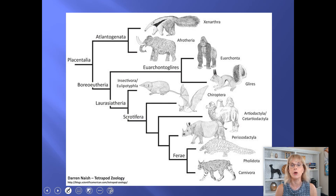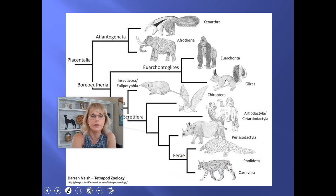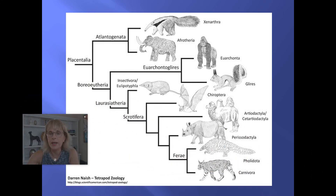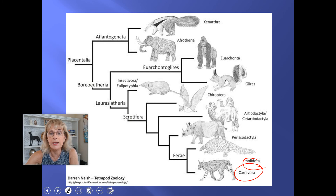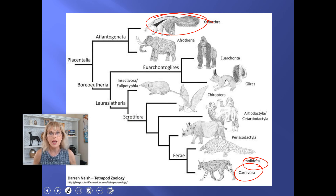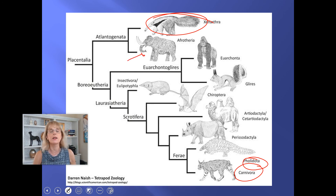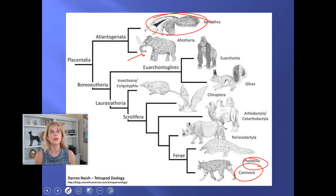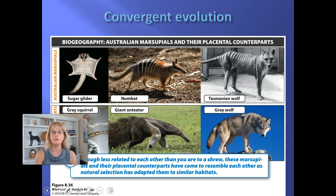Don't forget the pangolin and the armadillo. The pangolin is related to the carnivores, but the armadillo is related to the anteater — they are in no way related to each other. An armadillo is more closely related to an elephant than it is to a pangolin. A pangolin is more closely related to a lion than it is to an armadillo. Convergent evolution.